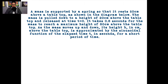A mass is supported by a spring so that it rests 50 centimeters above a tabletop, as shown in the diagram. The mass is pulled down to a height of 20 centimeters above the tabletop and released at time zero. It takes 0.8 seconds for the mass to reach a maximum height of 80 centimeters. As the mass moves up and down, its height h in centimeters above the tabletop is approximated by a sinusoidal function of elapsed time t in seconds. Sinusoidal means any function that has to do with a sine function — sine trig or any form of a sine trig function. Keep in mind that cosine is involved as well, because cosine is just a shifted sine function, especially when you look at it in a graph.